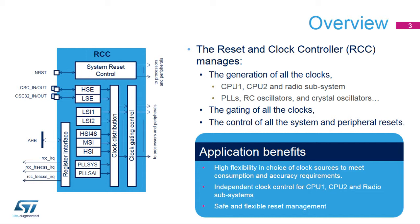STM32WB microcontrollers embed five internal oscillators, two oscillators for an external crystal or resonator, and two phase-locked loops, or PLLs. Many peripherals have their own kernel clock, independent of the system clock. The RCC provides high flexibility in the choice of clock sources, which allows the system designer to meet both power consumption and accuracy requirements. The numerous independent peripheral clocks allow a designer to adjust the system power consumption without impacting the communication baud rates, and also to keep certain peripherals active in low power mode.